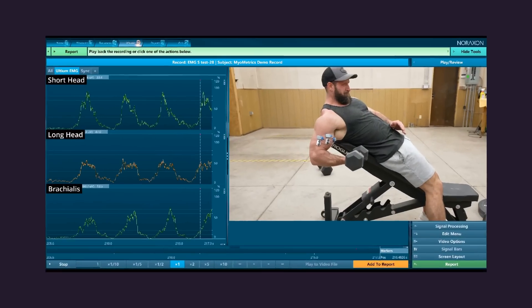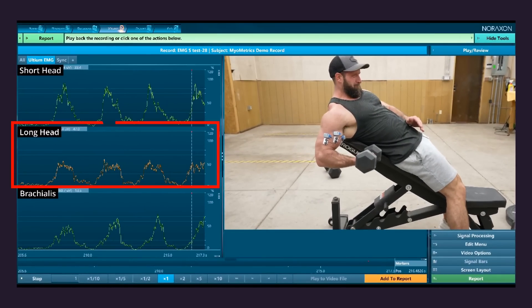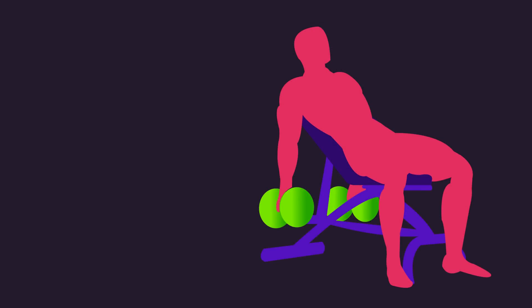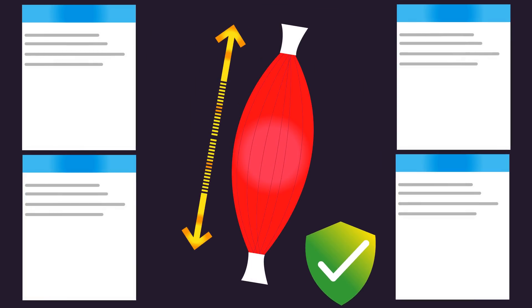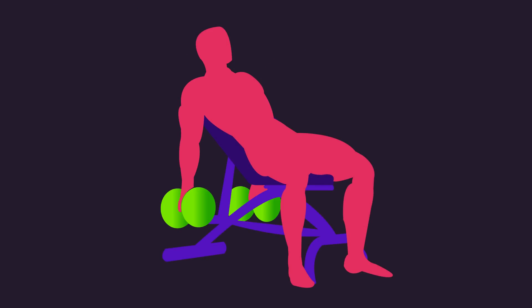This might relate to another one of Ryan's findings. He states incline curls poorly hit the long biceps head, and it hit the brachialis more. Yet we know incline curls would train the long head in a stretched position, and again, EMG does not pick up on stretch. Given that other evidence indicates stretch in an exercise is favorable for hypertrophy, it's sensible to hypothesize incline curls would indeed be great for long head biceps gains.